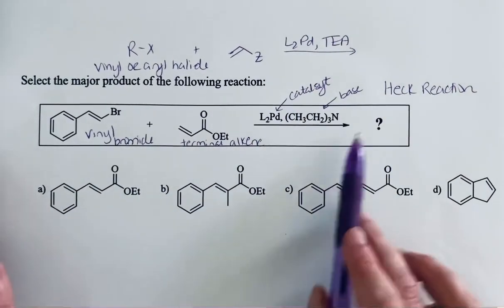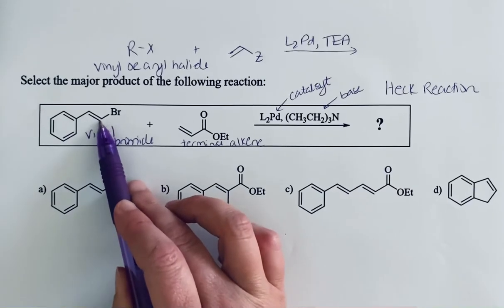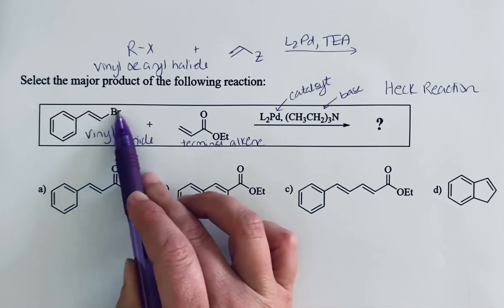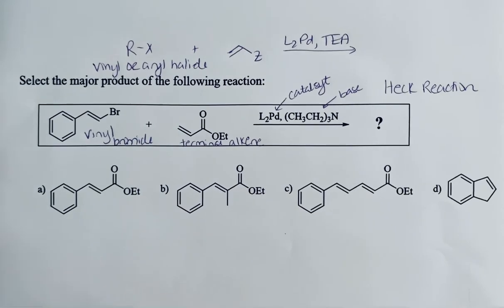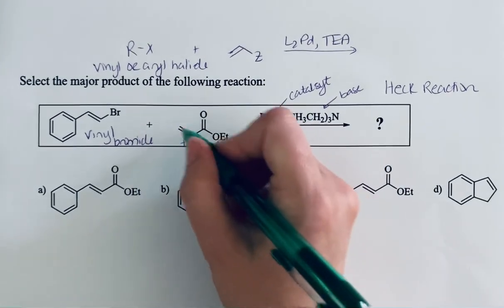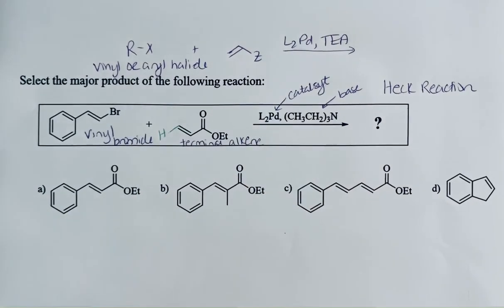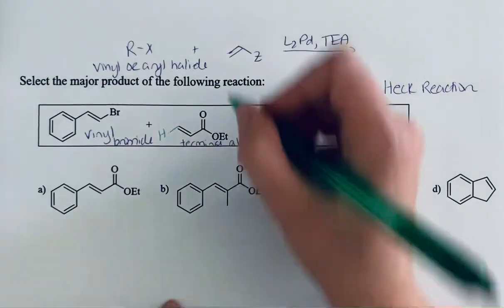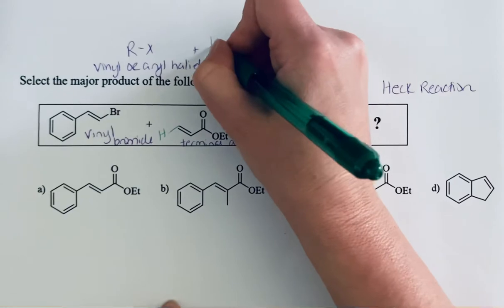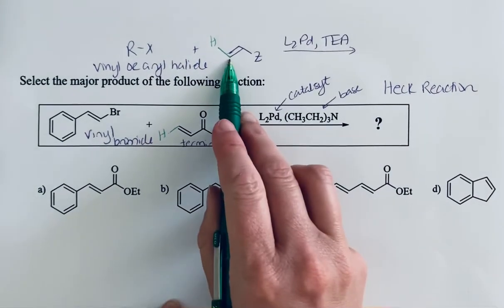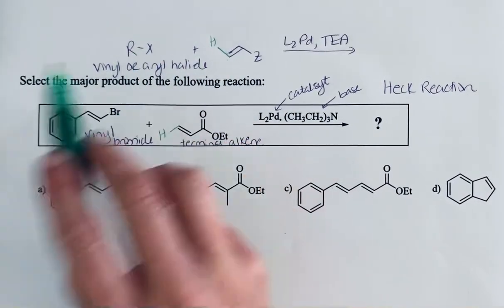What happens when you bring these together is you're going to form a new bond between the carbon where the halogen was and where the trans hydrogen is. If we look at this terminal alkene we're going to look at the trans hydrogen to be replaced. If we're looking at our generic example up here there's that trans hydrogen that's going to be replaced. So what it's going to be replaced with is this R group.